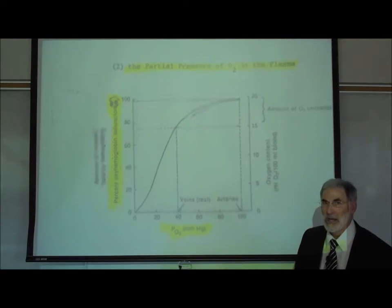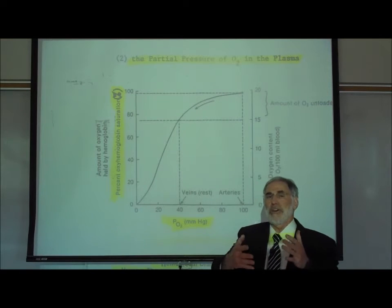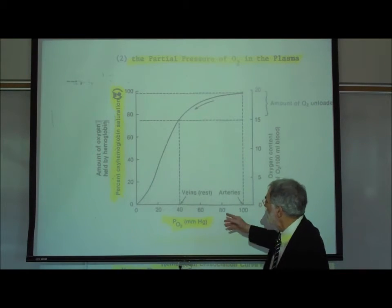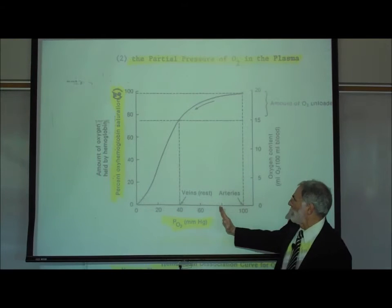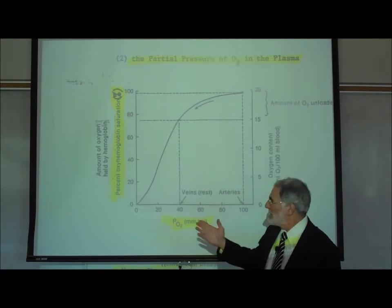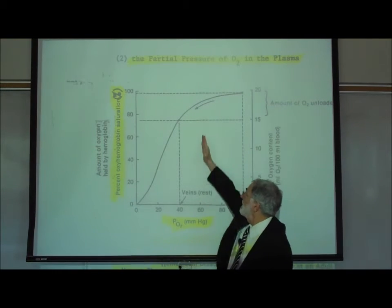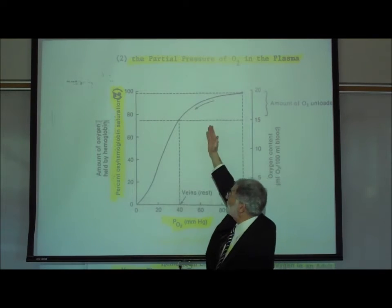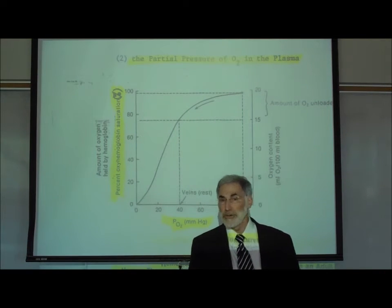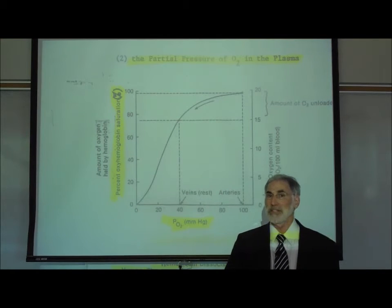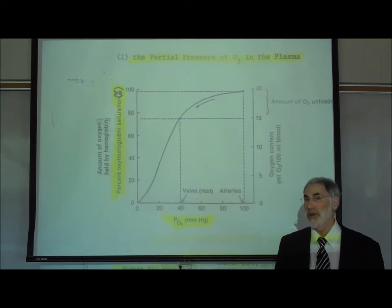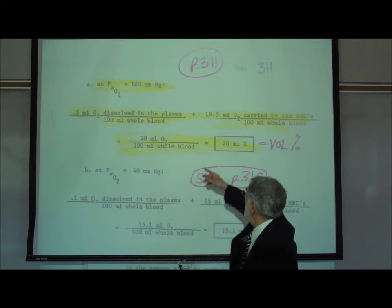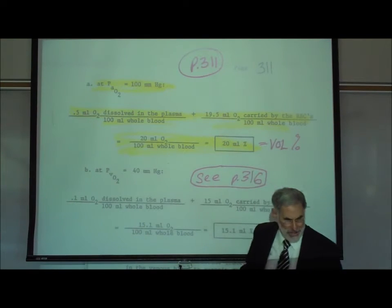If the partial pressure of oxygen were to decrease in the alveoli, say dropping from the normal 100 down to 60, nevertheless the hemoglobin in the red blood cells would still be about 90% saturated or loaded up with oxygen relative to their total capacity to carry oxygen.